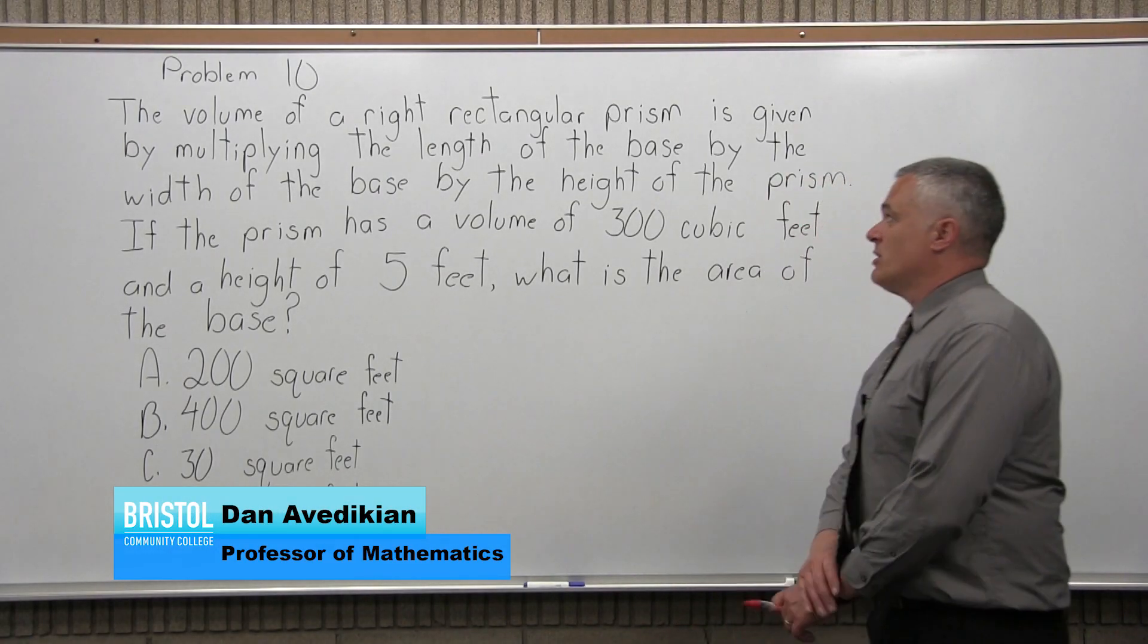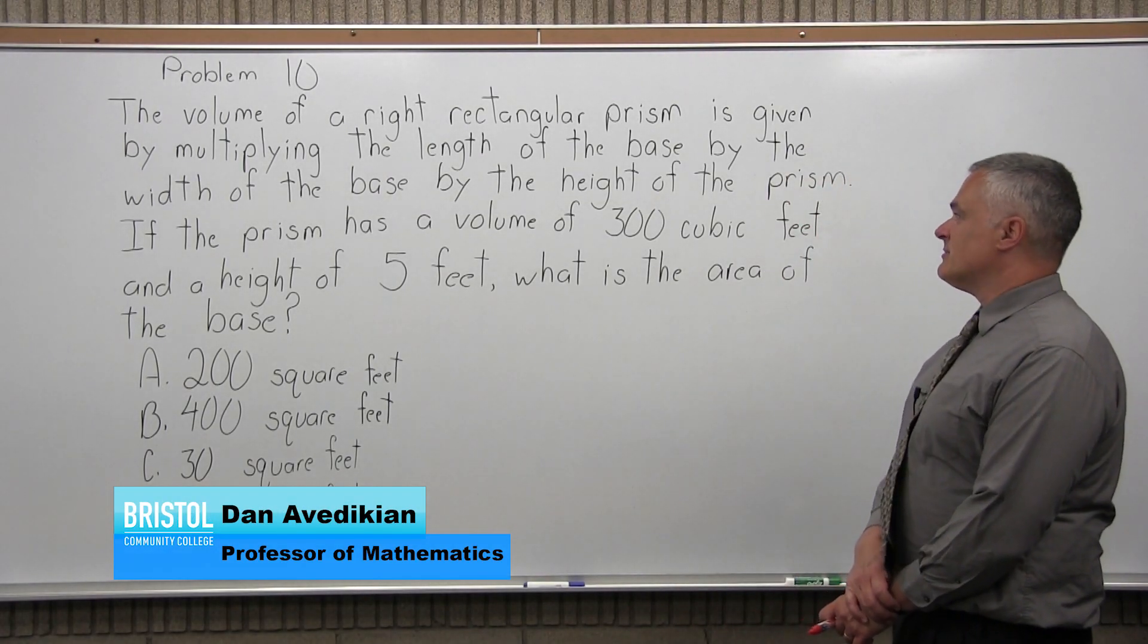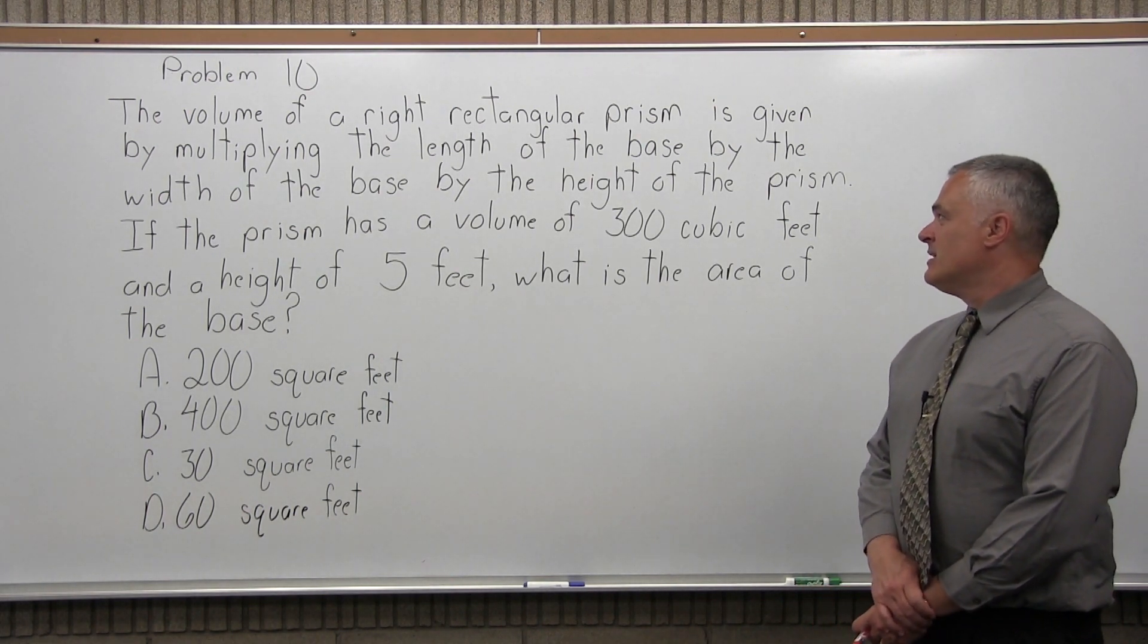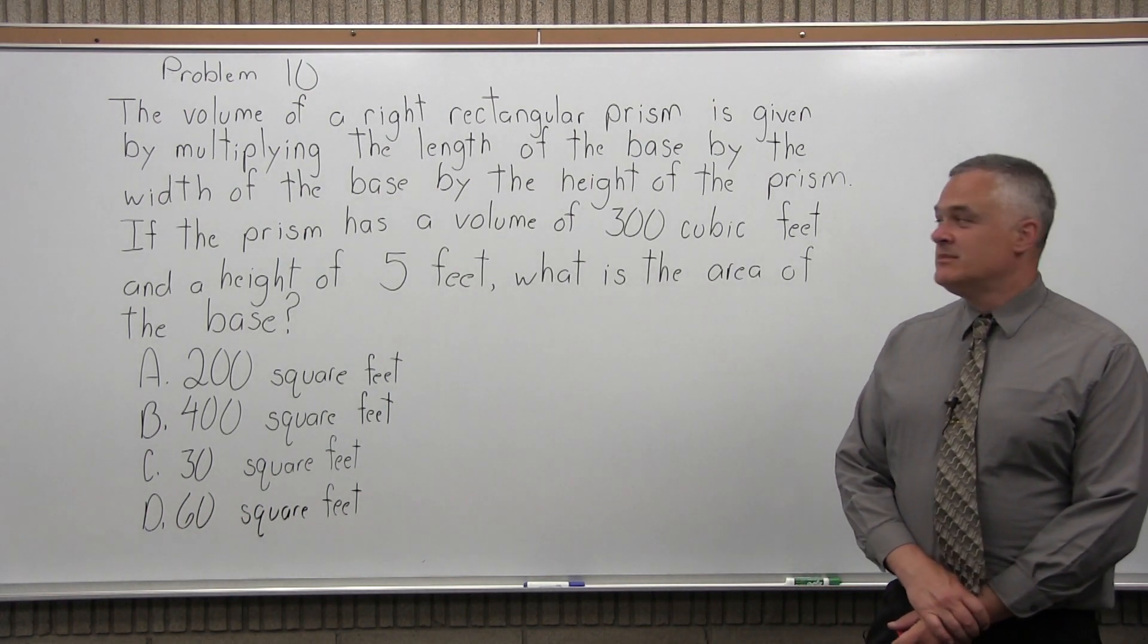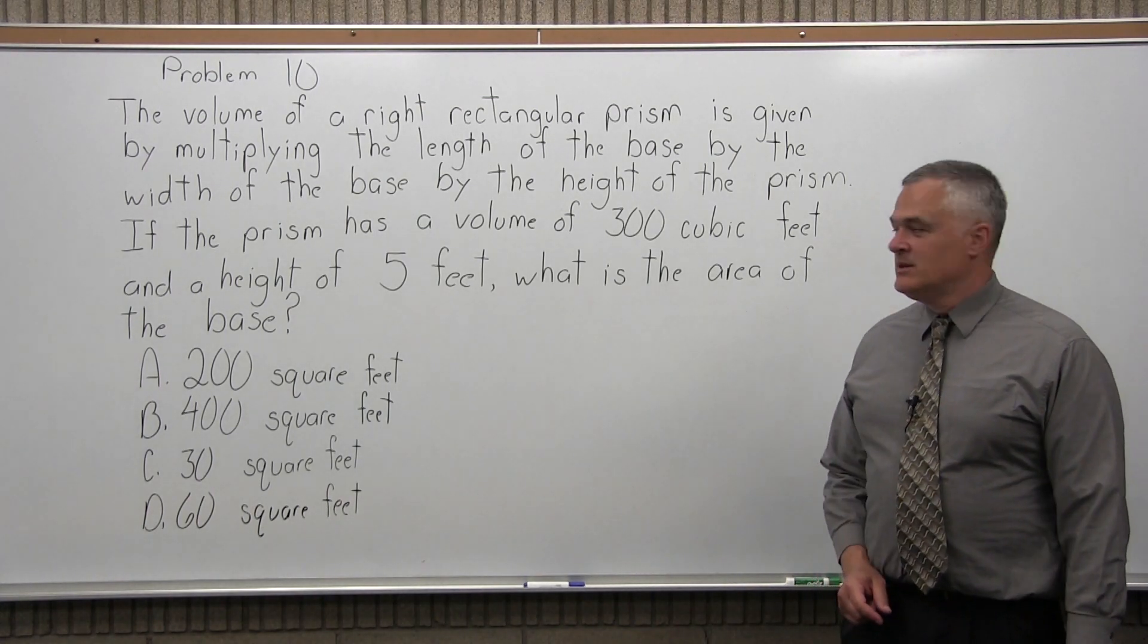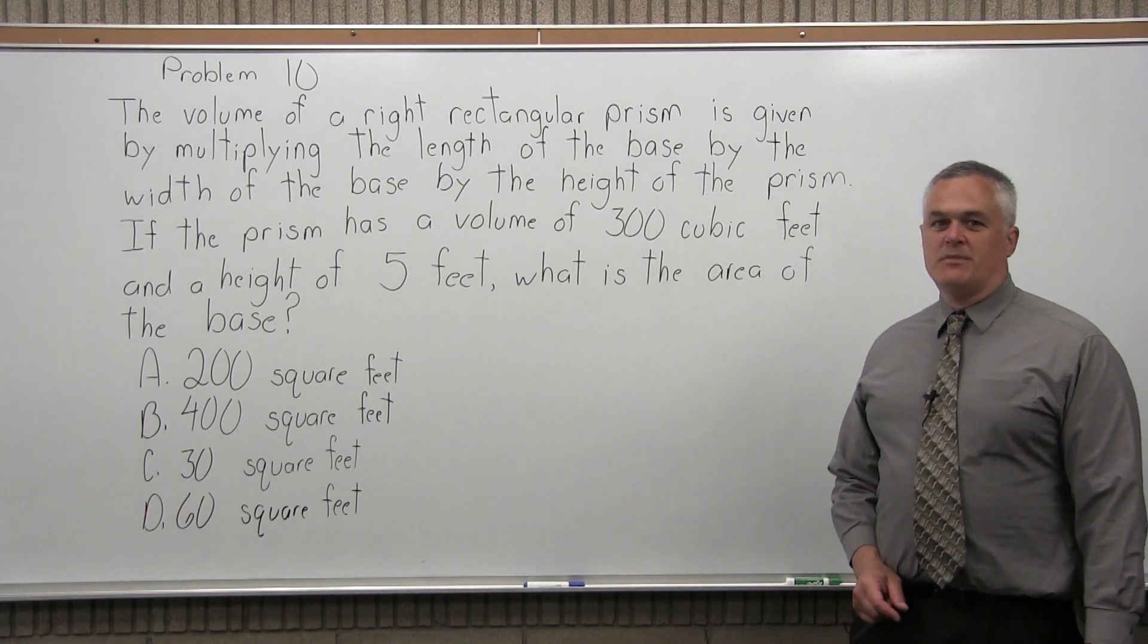This is problem 10. It says the volume of a right rectangular prism is given by multiplying the length of the base by the width of the base by the height of the prism. If the prism has a volume of 300 cubic feet and a height of 5 feet, what is the area of the base?